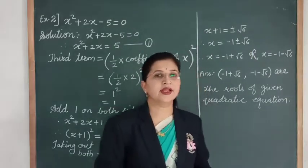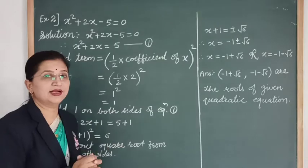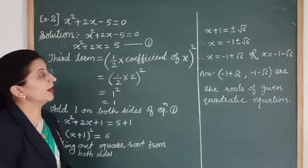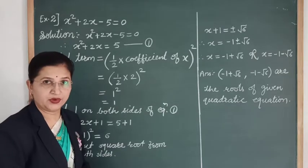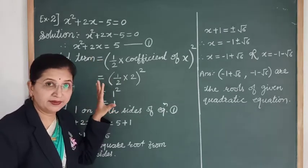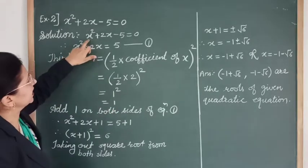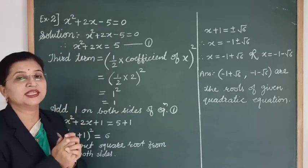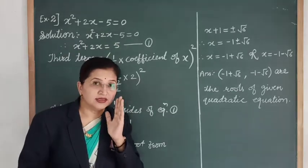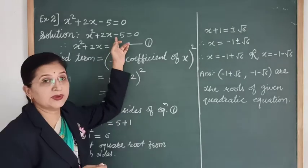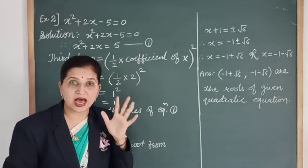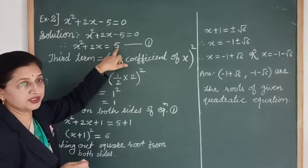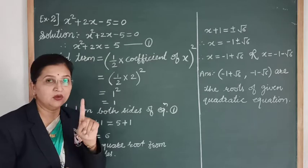Dear students, we have another example equation. Let's solve it by the completing square method. The equation is x² + 2x - 5 = 0. Whenever we apply the completing square method, the first step is to transfer the constant term to the RHS. Here the constant term is -5, so it becomes positive 5 on the RHS. Let's call this equation 1.